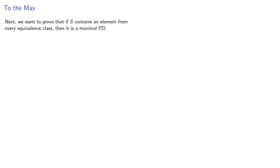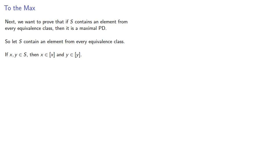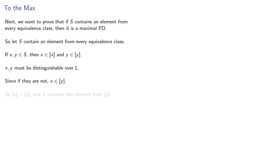Next, we want to prove that if S contains an element from every equivalence class, then it is a maximal pairwise distinguishable set. We can assume the antecedent: S contains an element from every equivalence class. So if X and Y are in S, then X is in some equivalence class and Y is in some equivalence class. Since S is a set of pairwise distinguishable elements, X and Y must be distinguishable over L, since if they're not distinguishable, then X is an element of the equivalence class of Y, meaning the equivalence class of X equals the equivalence class of Y, and S would contain two elements from that equivalence class. So S must be a pairwise distinguishable set.